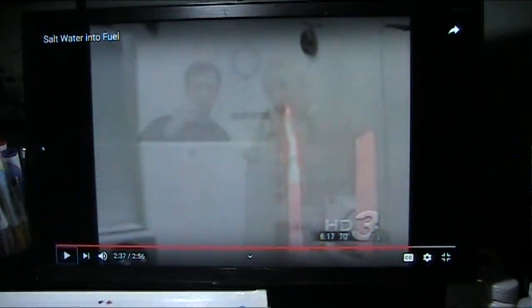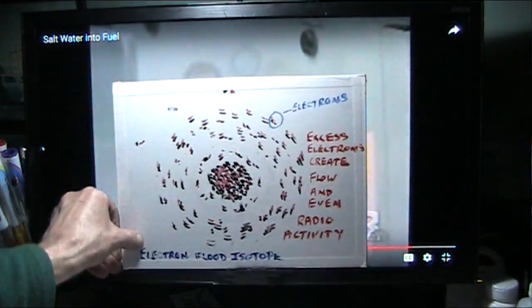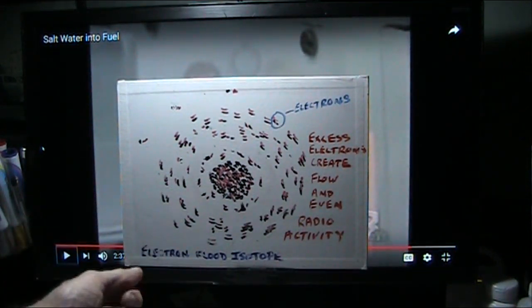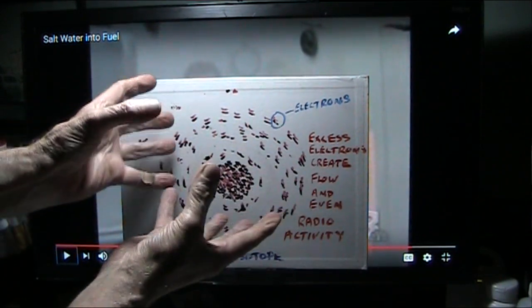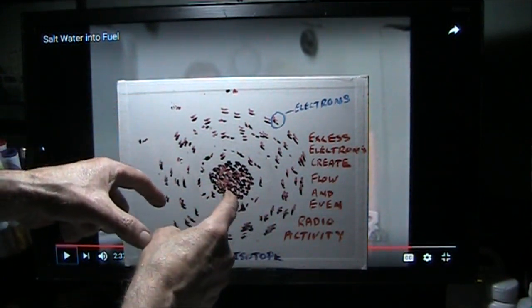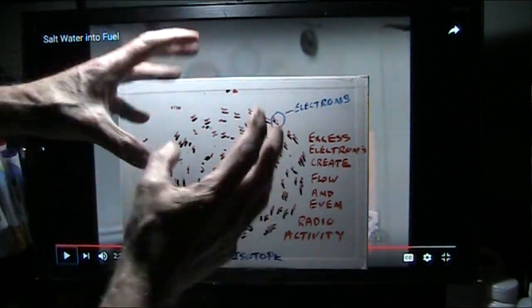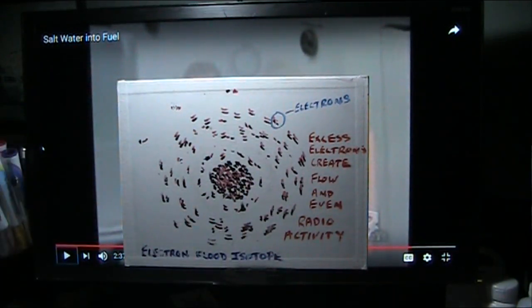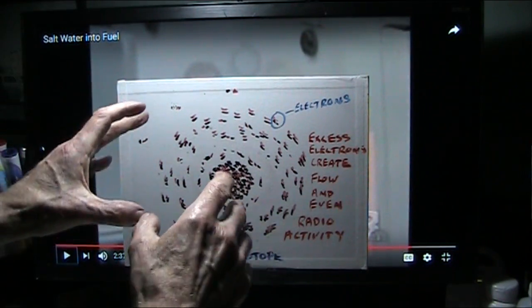Now, what that is, what he's done, is he's taken the particles that are in orbit around the nucleuses. And he has just got a certain frequency. Like when they do this... Pow! And then the champagne glasses go flying apart.